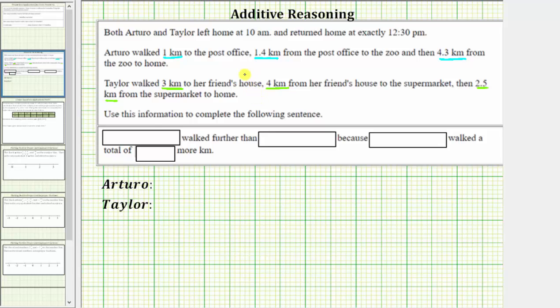We're asked to use this information to complete the following sentence: blank walked further than blank because blank walked a total of blank more kilometers. The first step is to determine the total distance walked by Arturo and Taylor.